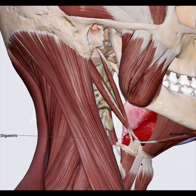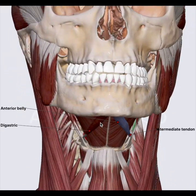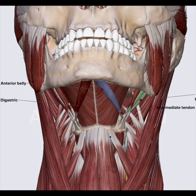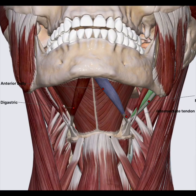The larynx is lifted and the epiglottis will close the laryngeal inlet. Now going back to muscles, let's start with the suprahyoid muscles. These are the digastric muscle, mylohyoid muscle, geniohyoid, and stylohyoid.